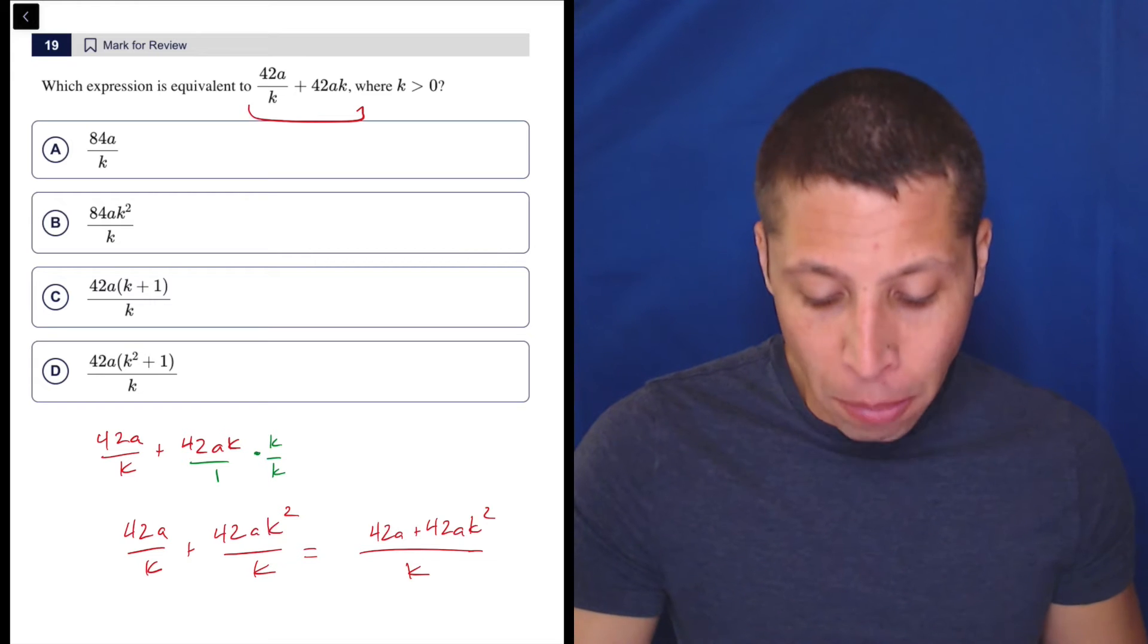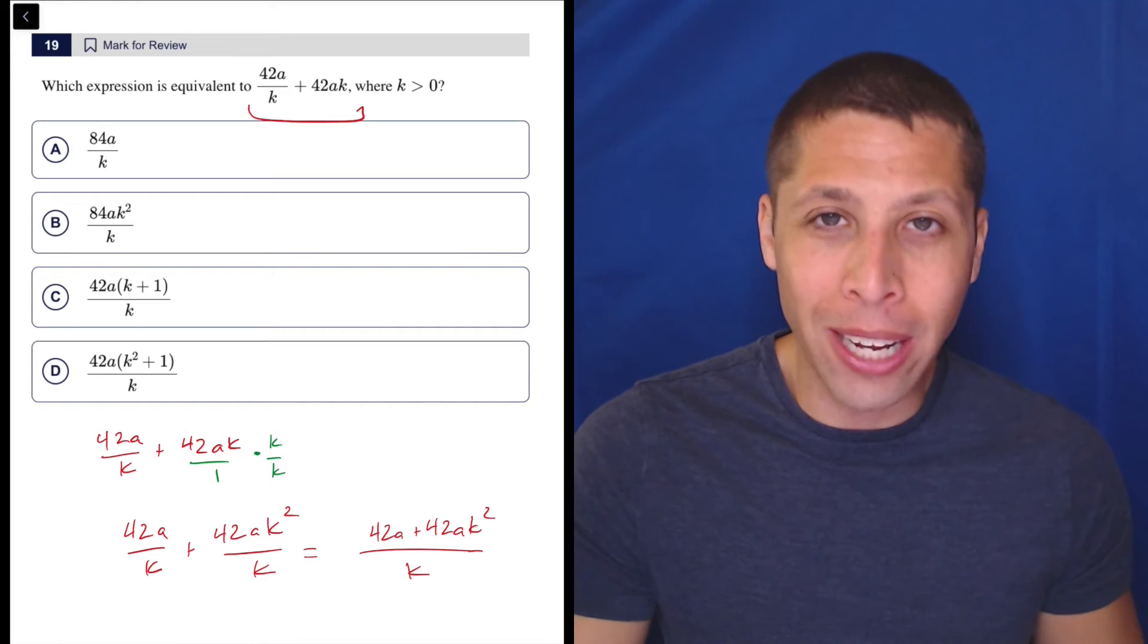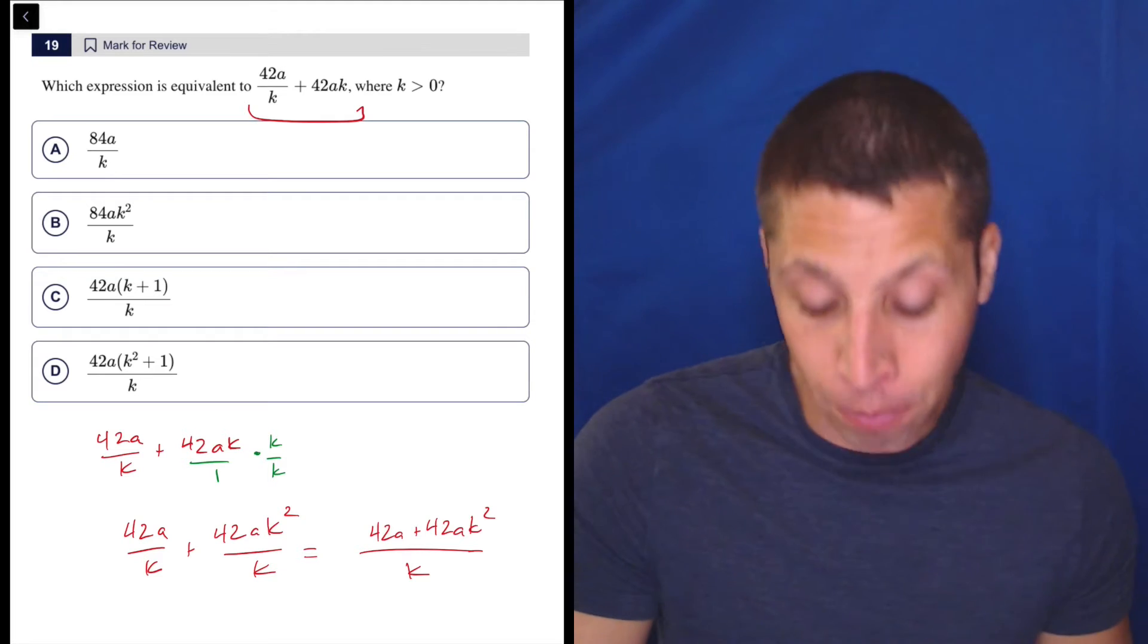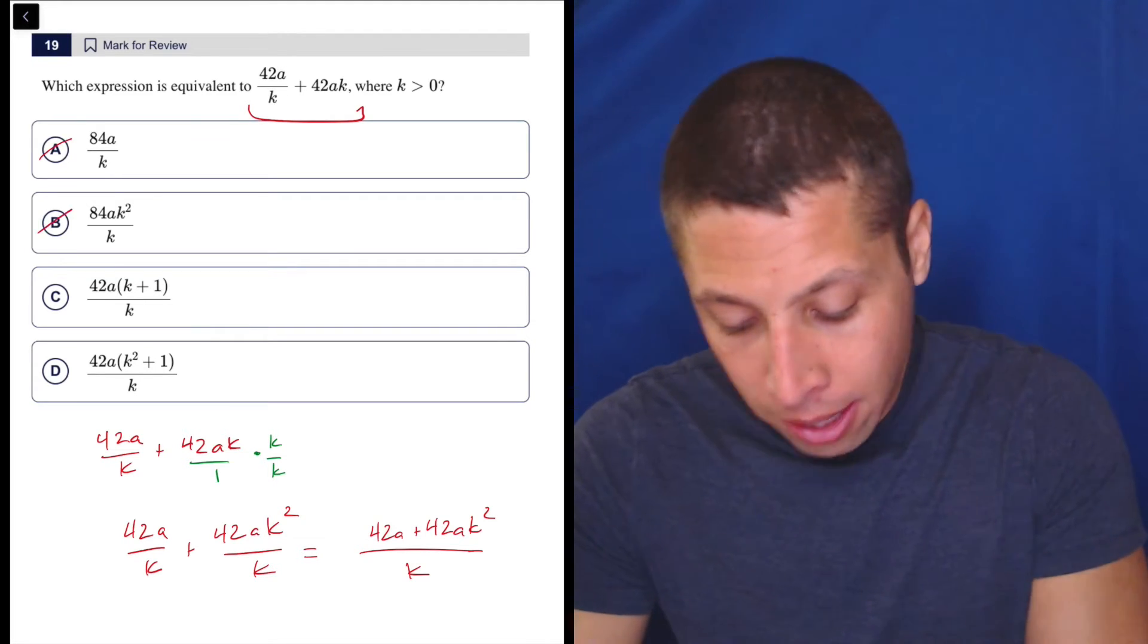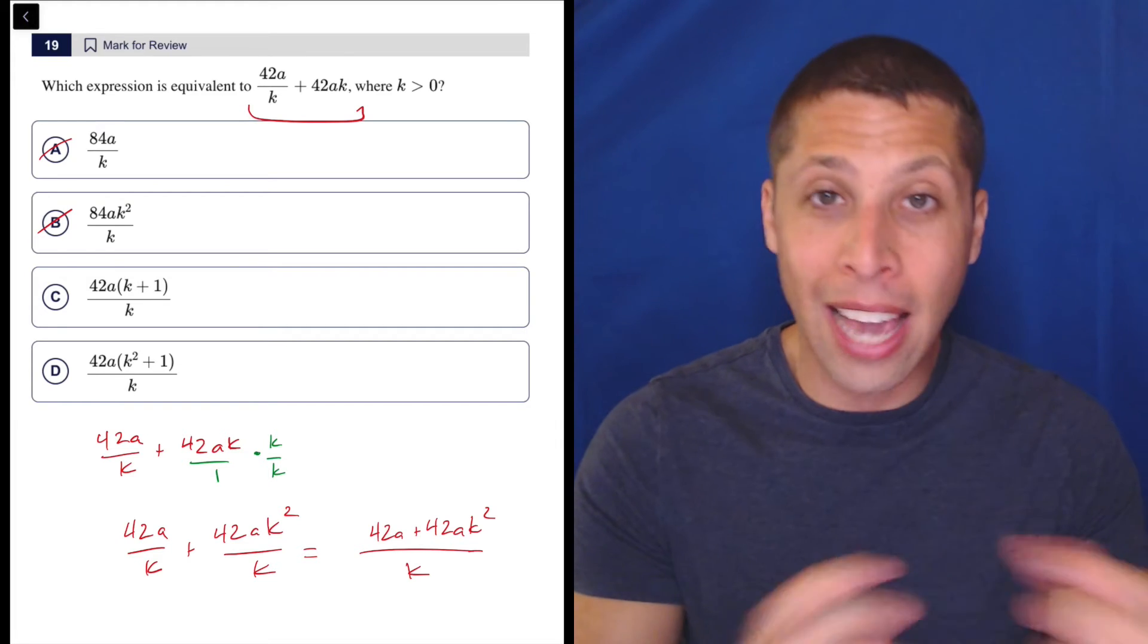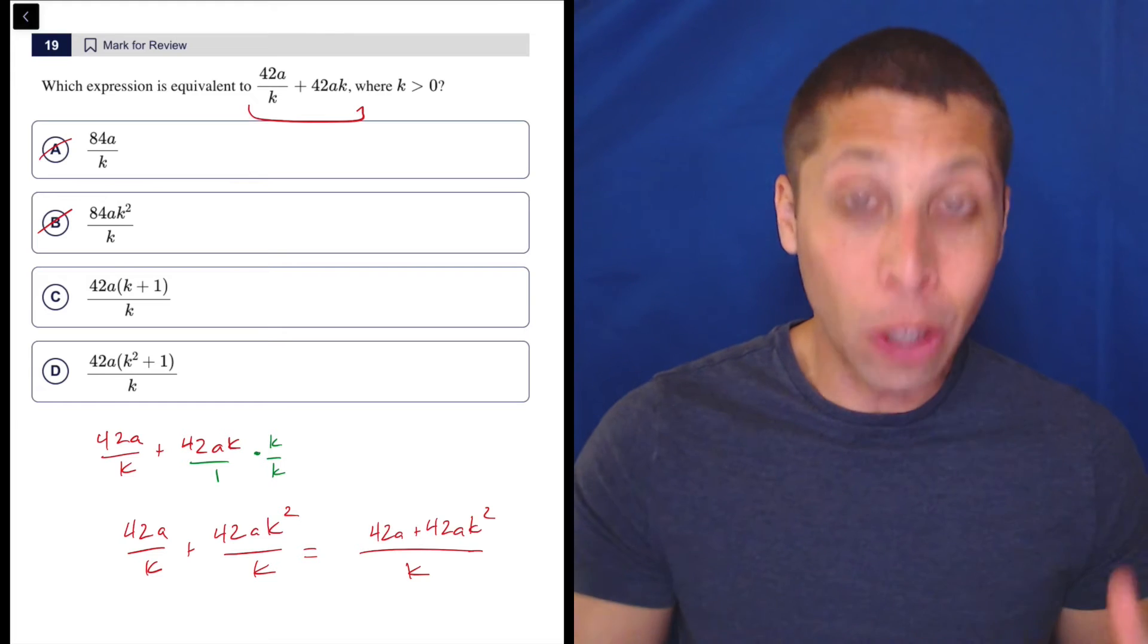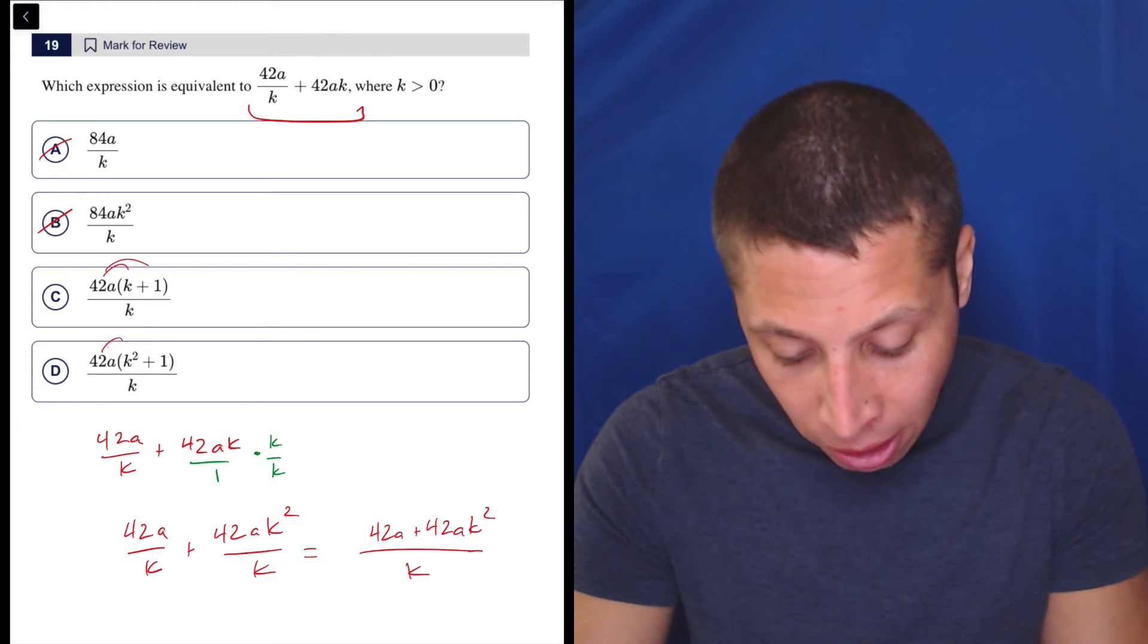We can then factor. But if that bothers you, remember, you don't have to get all the way to the right answer. You can just kind of notice, it's probably going to be c or d here because a and b don't look like that. We can't combine with the k squared piece.